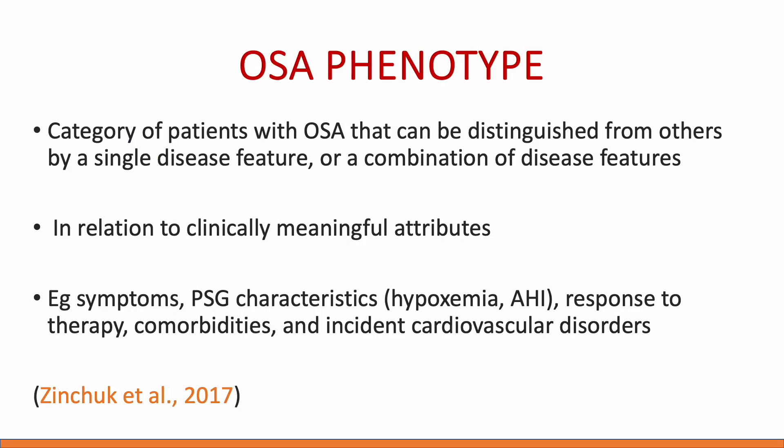So what is an OSA phenotype? We discussed certain endotypes. Those meaningful traits in a patient with OSA that distinguish one from another constitute a phenotype. For instance, patients with high AHI versus low AHI, patients with high oxygen desaturation index or hypoxemia versus those without much desaturation, patients who respond to CPAP versus those who do not, male versus females, overlap syndrome, patients with comorbidities, and patients with positional OSA.